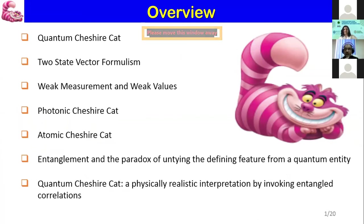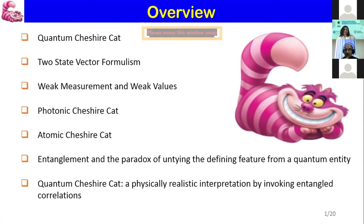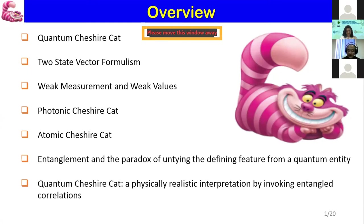Then I will talk about the photonic Cheshire Cat and the atomic Cheshire Cat, and lastly our two papers on Cheshire Cat: one on entanglement and the paradox of untying the defining features from the Cheshire Cat, and a quantum Cheshire Cat paper where we give a different definition and explanation from the one who introduced it.